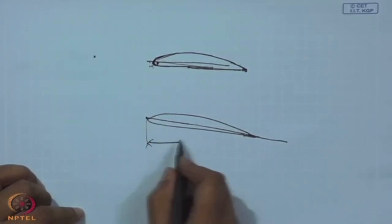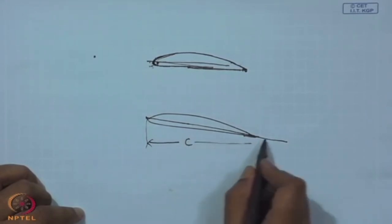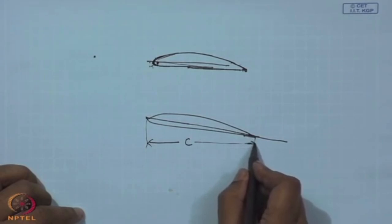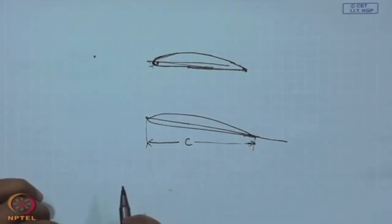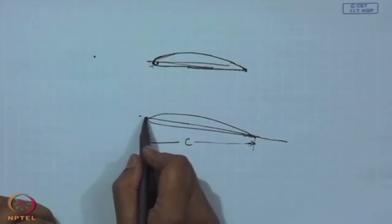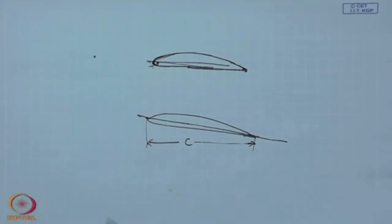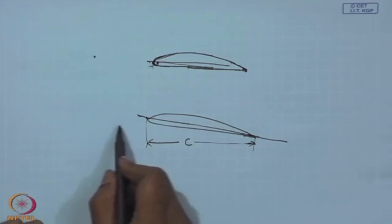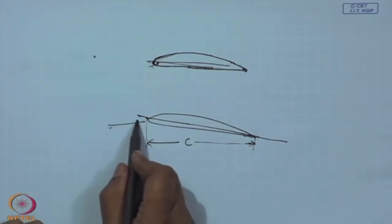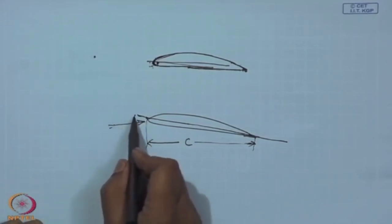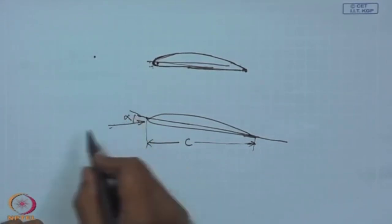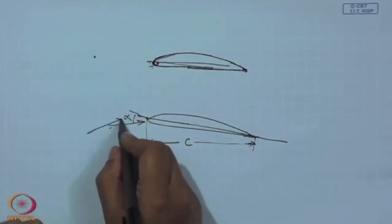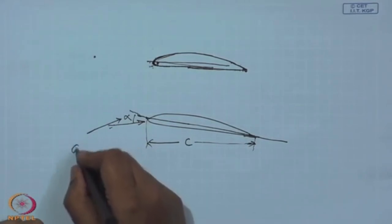The chord is usually denoted by C and is a very important reference line, because the angle at which it makes with the flight direction or the relative wind is called the angle of incidence or angle of attack, usually denoted by alpha. If this is the relative wind direction, then this angle between the chord and the relative wind is called the angle of attack.